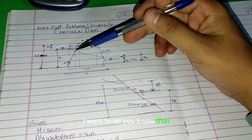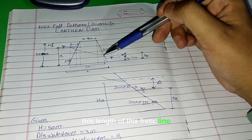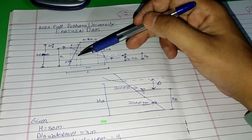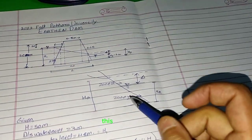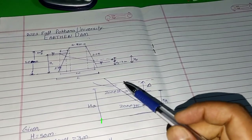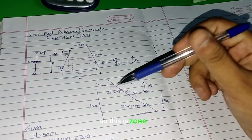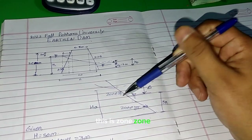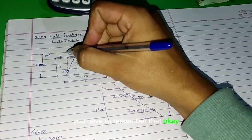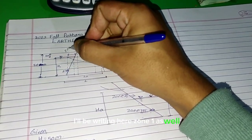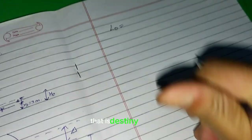First of all, we have to calculate the length of the phreatic line, and with that we can calculate the seepage discharge of this earthen dam. I have shown this magnified portion here — this is Zone 2, this is Zone 3, and this is Zone 1. You have to remember that. I'll be writing Zone 1 as well. The length of the phreatic line is denoted by L₀.